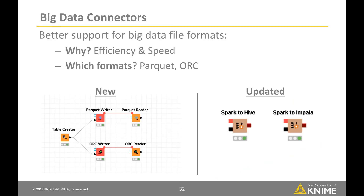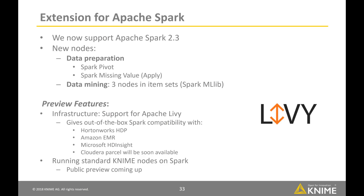Let's see what's new with big data extensions. We wanted to better support big data file formats to improve efficiency and speed. You can now read and write Parquet and ORC files with KNIME — the new Parquet and ORC Reader and Writer nodes can use your local disk, HDFS, or S3. We have also updated the Spark to Hive and Spark to Impala nodes. With this release, we add support for Apache Spark 2.3 — the only thing you need to do is change the Spark version in the Create Spark Context node to 2.3 and re-execute your workflow.